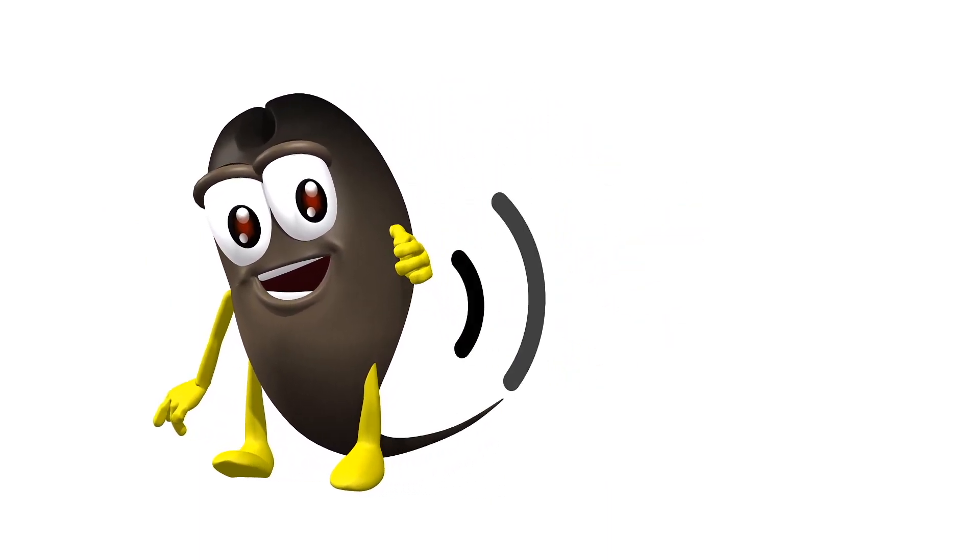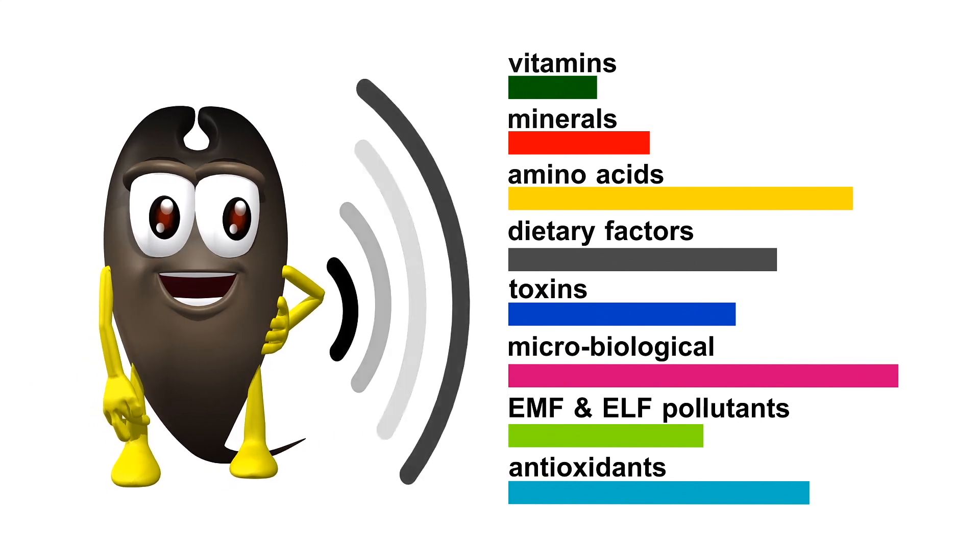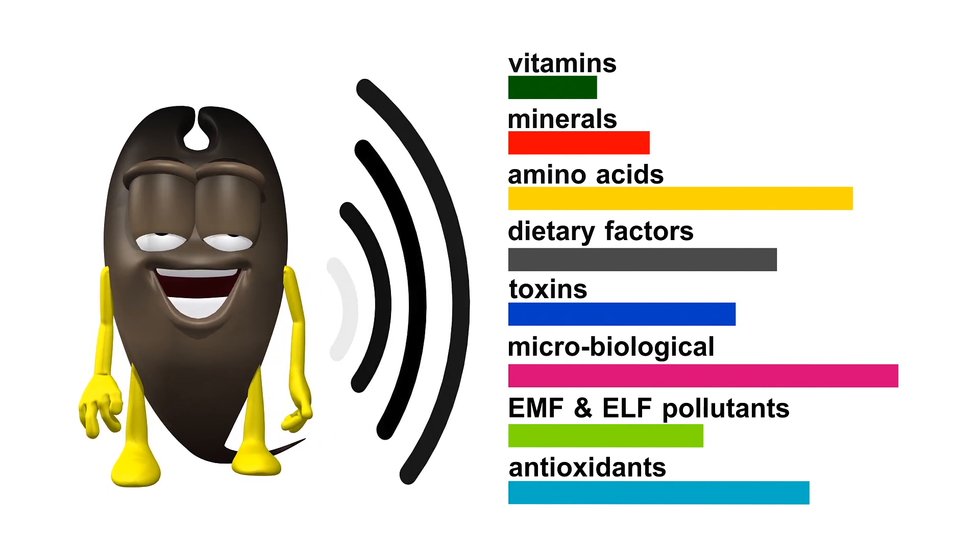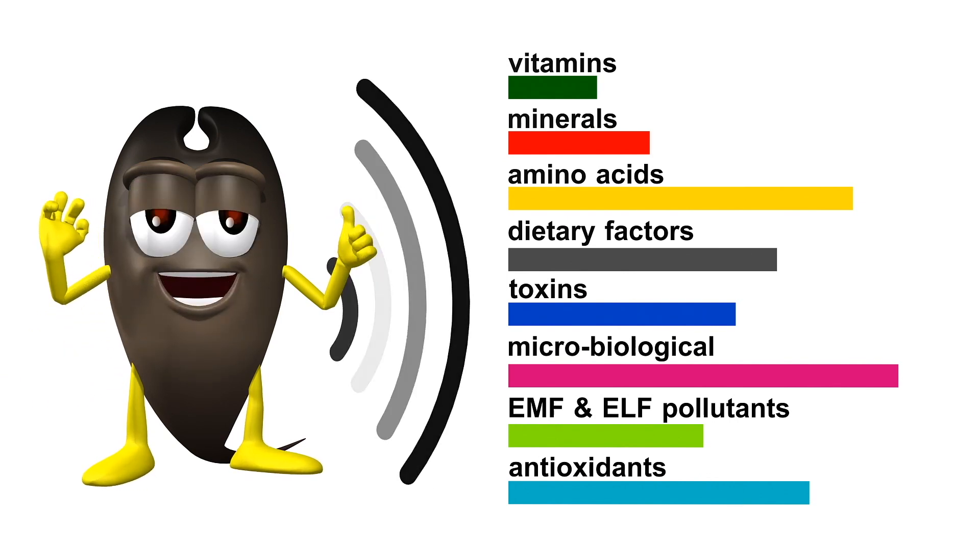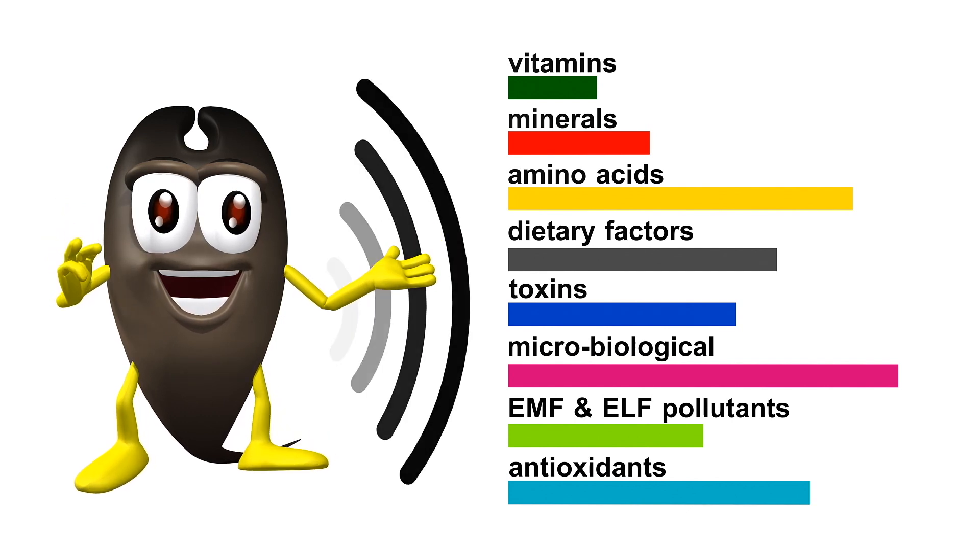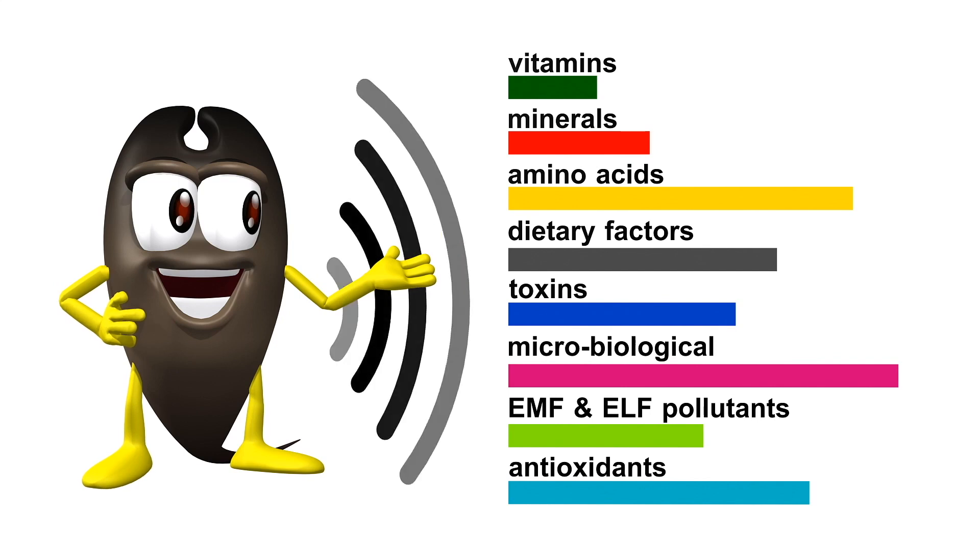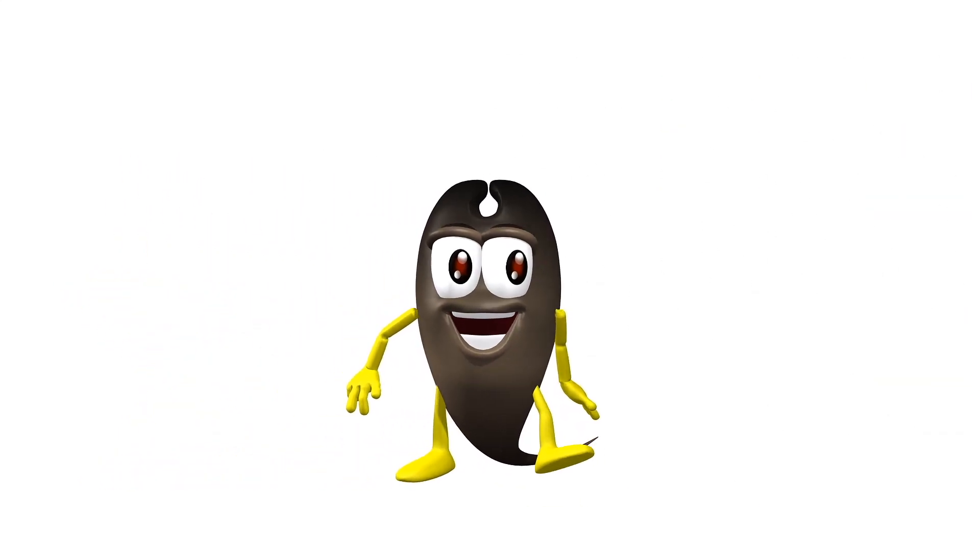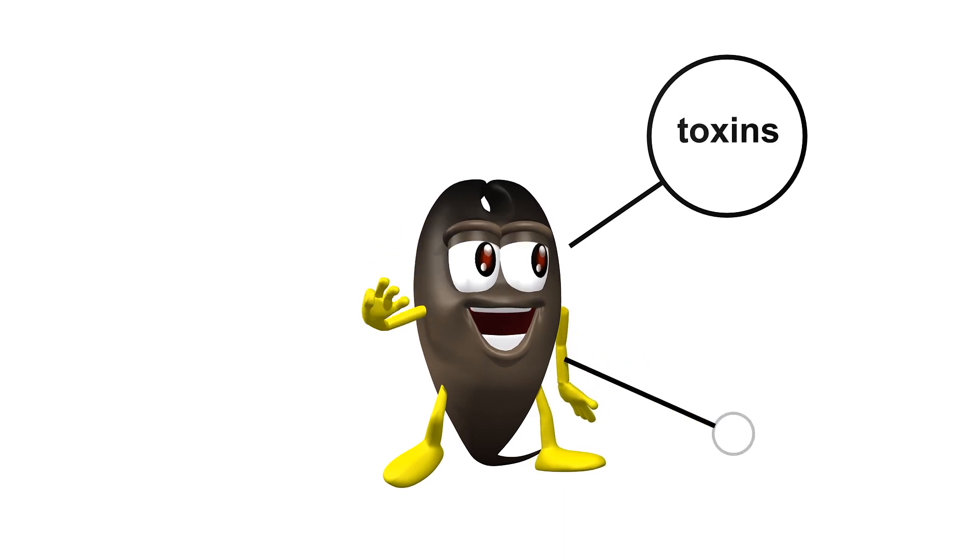Each strand of hair holds a historic record of homeodynamic information, including vitamins, minerals, amino acids, dietary factors, toxins, microbiological influences, and even negative electrical waves such as EMF and ELF pollutants. This information helps to paint a bio map of the unique homeodynamic signature of every individual.